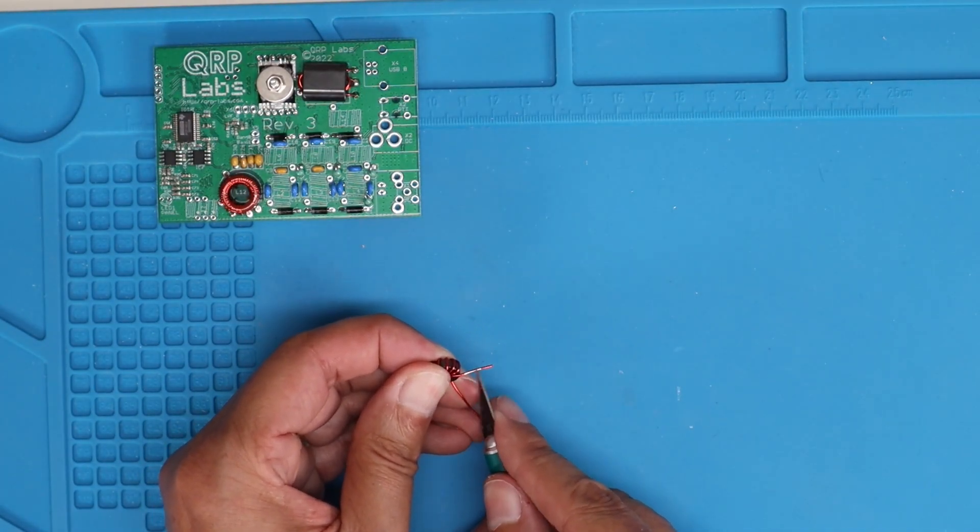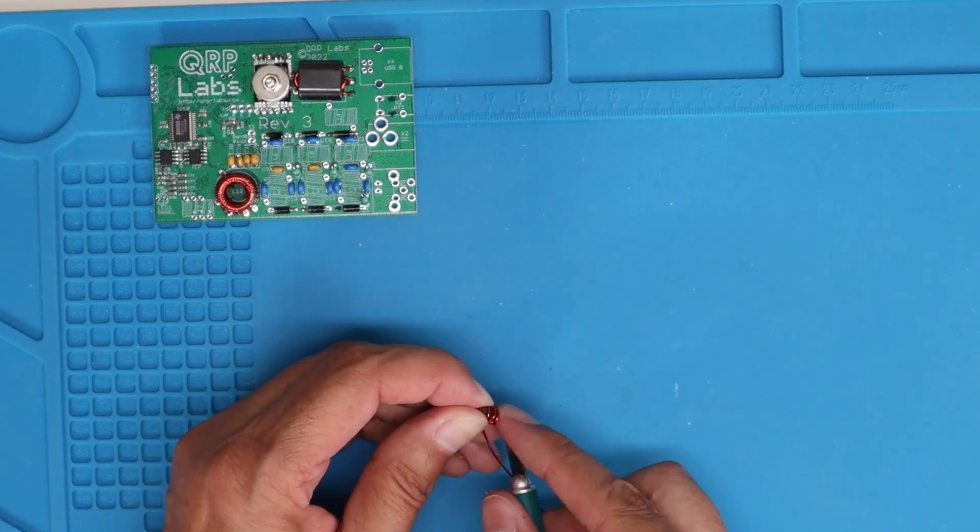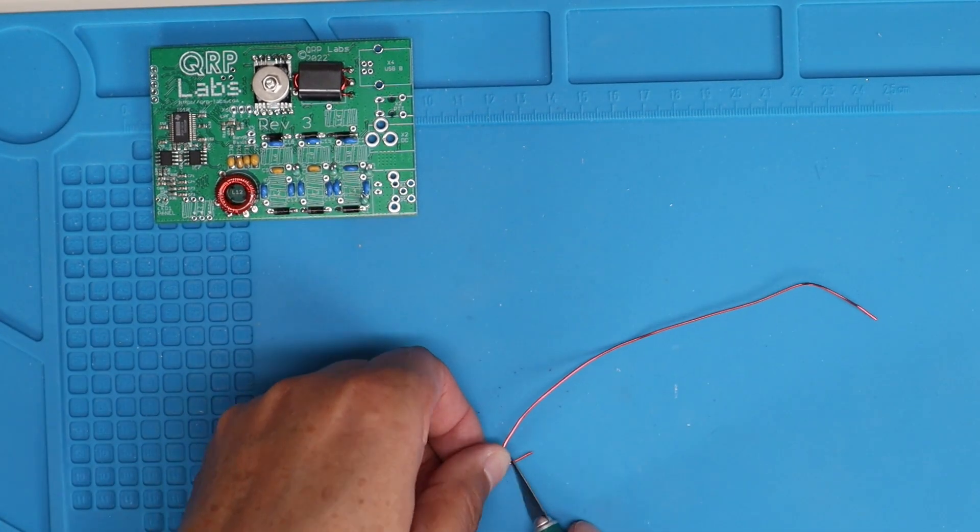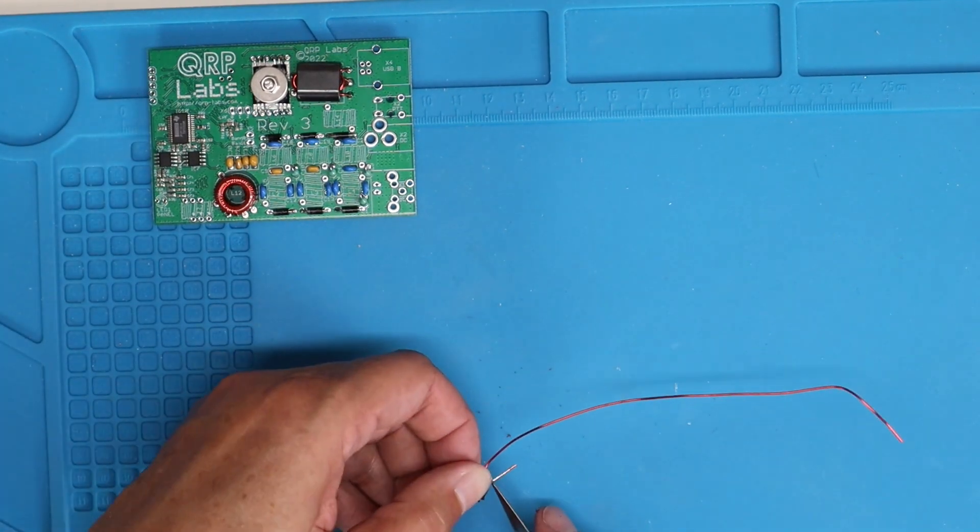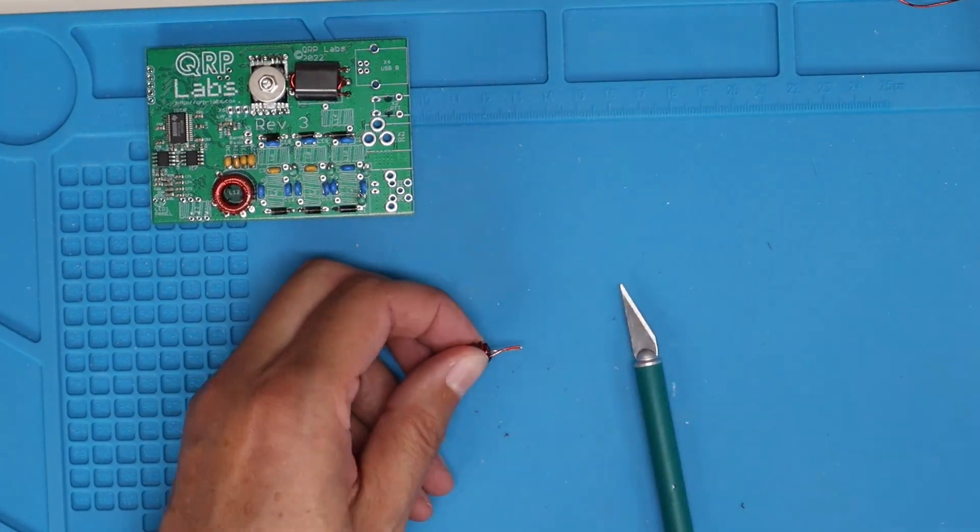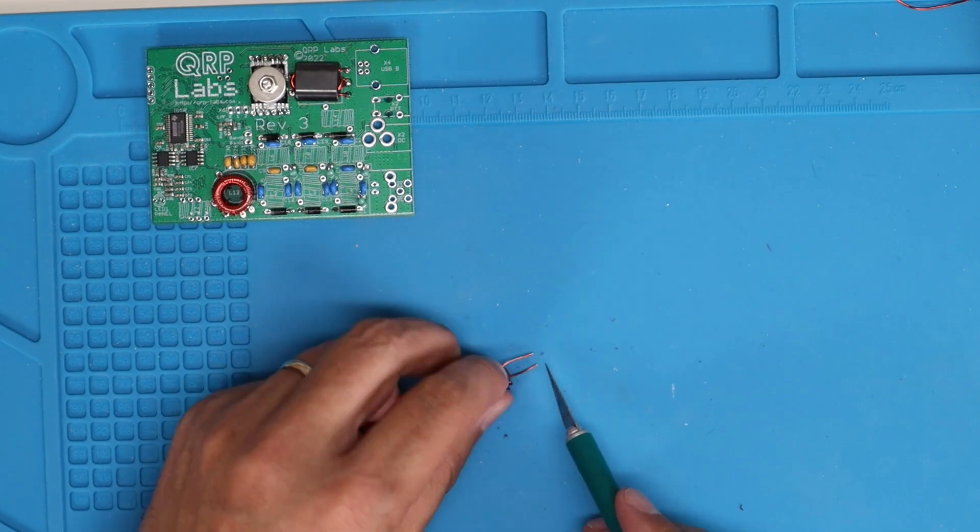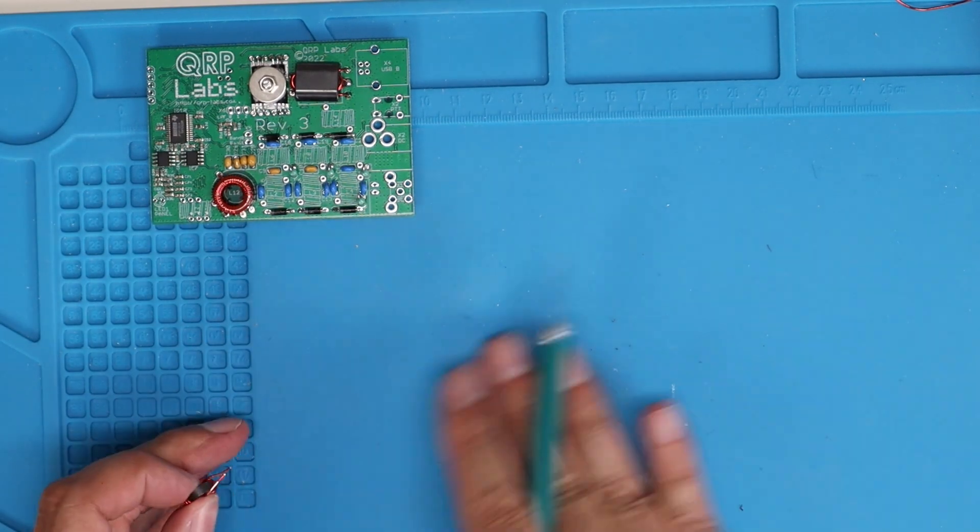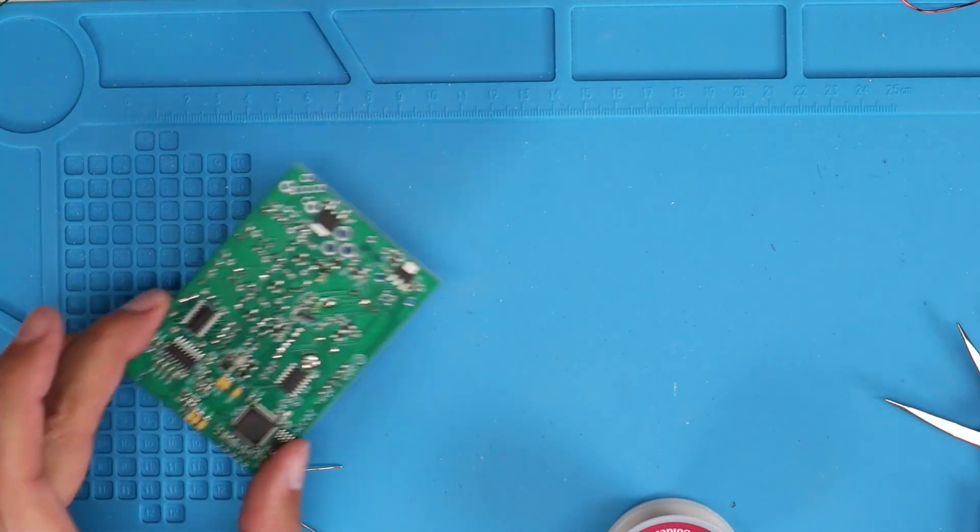And as with T1 we're going to scrape the enamel off of this 22 gauge wire so that we can get a nice good joint on it. Scrape it all off the area that will go through the PCB, and trim off this other leg and do the same. And then we'll go ahead and solder it up and that will be the end of this segment.